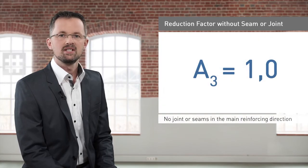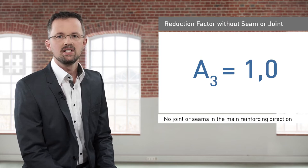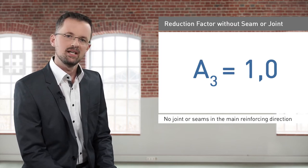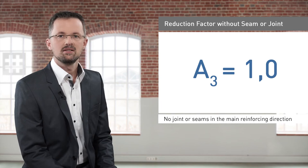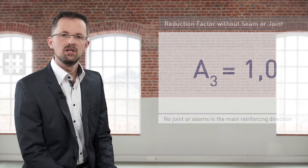If it is possible to avoid joints or seams in the geosynthetics in the main reinforcement direction, then the reduction factor A3 is taken as 1.0.